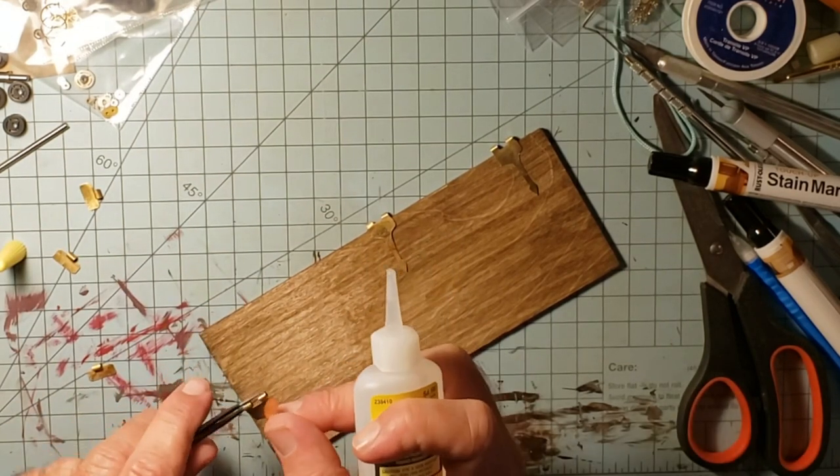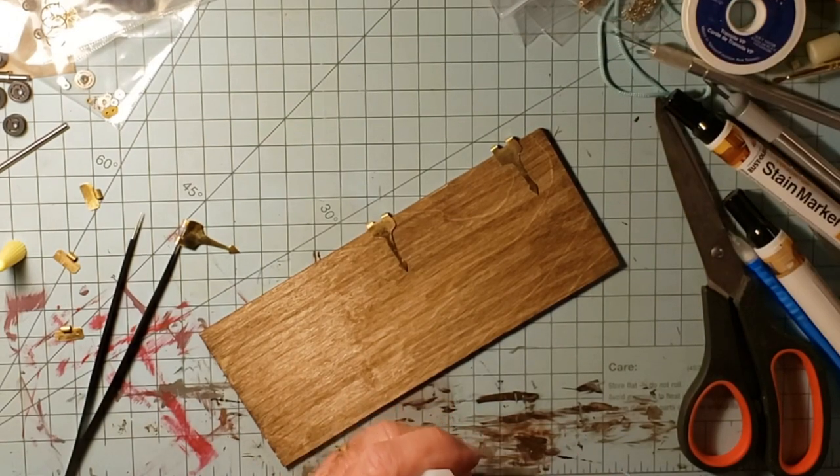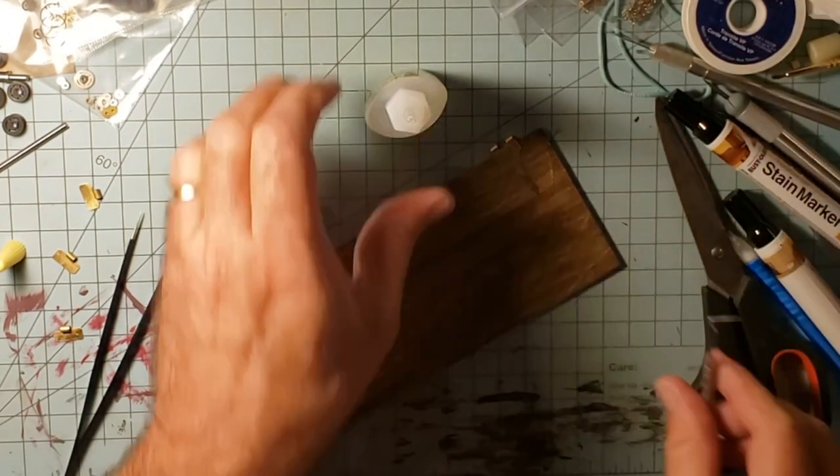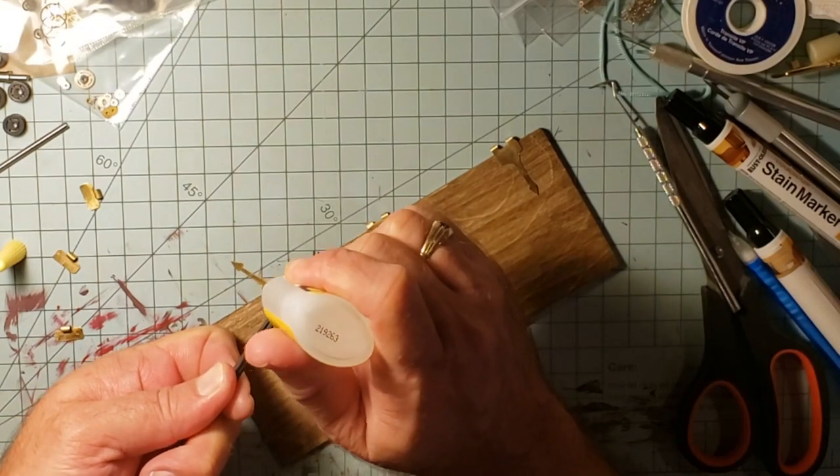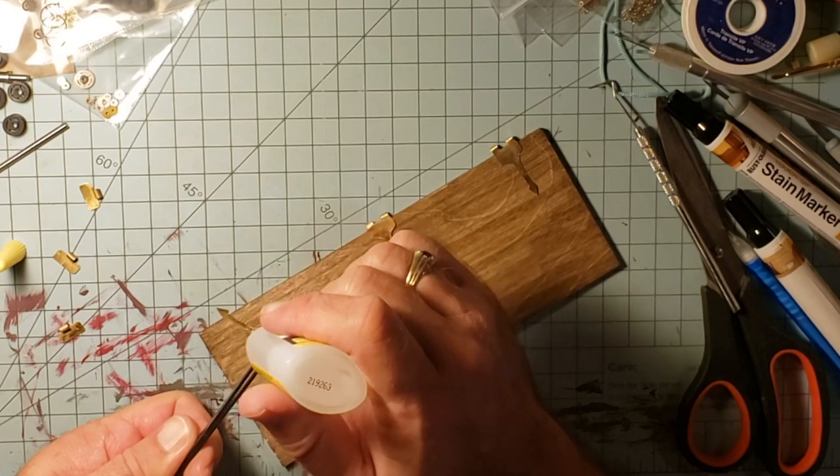And of course, as all CA glue bottles are typical of, it's clogged, so I have to get the tip real quick. Thought I got it right the first time, but nope. Try again. Hey, there we go.